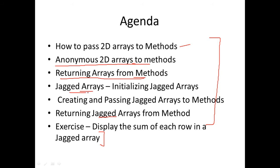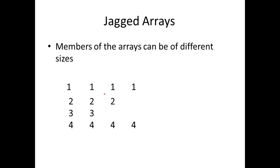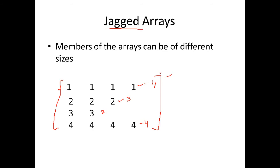Next is a very interesting concept called jagged arrays. In Java you can have an array where each row is of a different size — for example, the first row has four elements, the second has three, the third has two, and the fourth has four. Such arrays where each row has a different size are called jagged arrays. We'll see how to initialize, create, pass, and return jagged arrays, and finally take up an exercise.